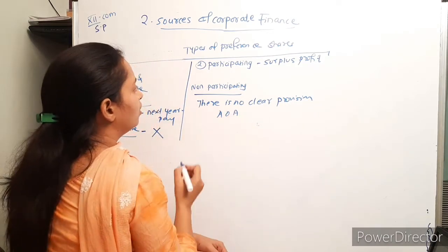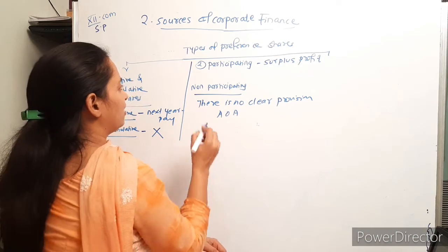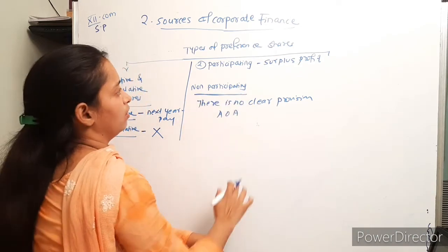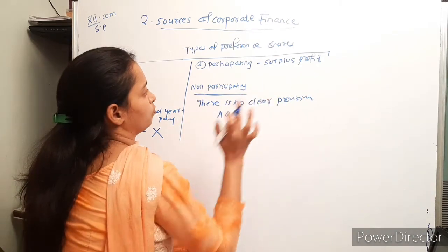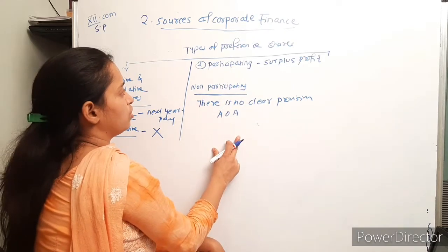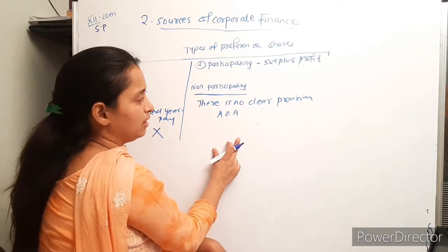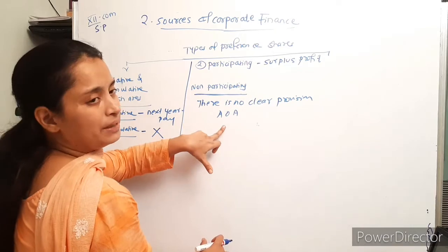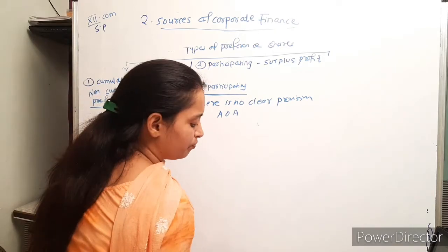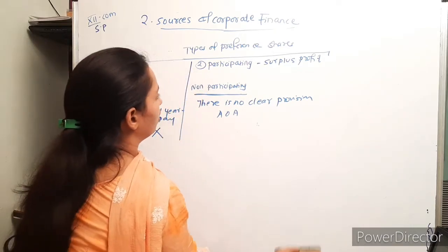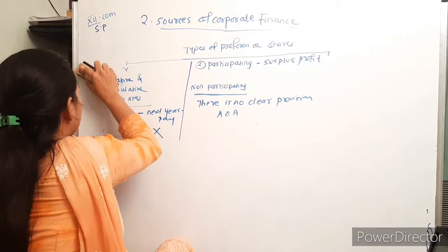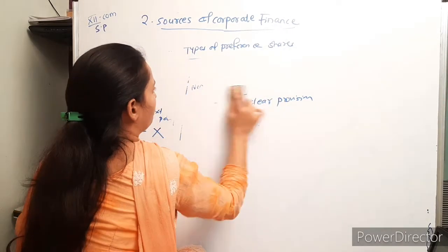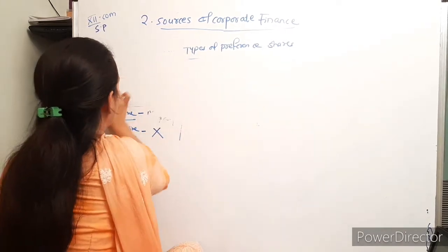Non-participating preference shares are deemed to be non-participating if there is no clear provision made in the articles of association. In that case, they will not get any part of the surplus profit.